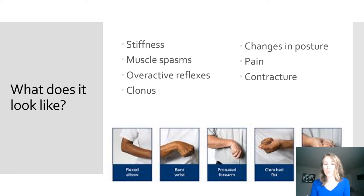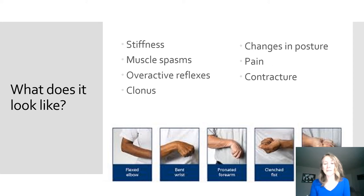Some specific examples of what a contracture may look like include a clenched fist, a bent elbow, a stiff knee, or a pointed foot. When spasticity affects the muscles of the legs, your balance and risk of falling will increase. You could also become more fatigued or tired, making it harder for you to move. Lastly, spasticity could affect your ability to perform many of your everyday activities.